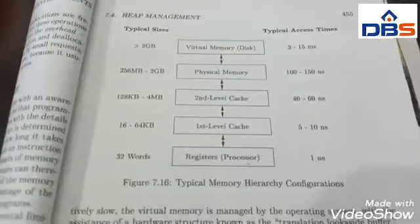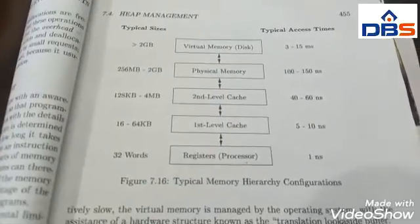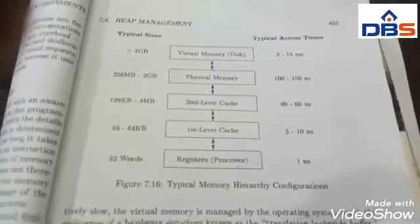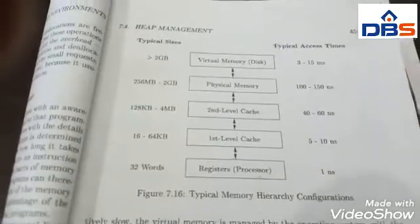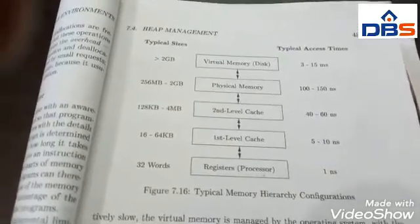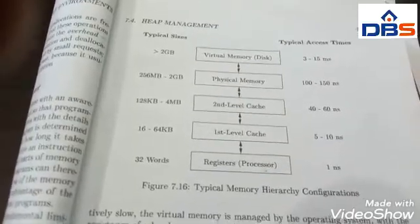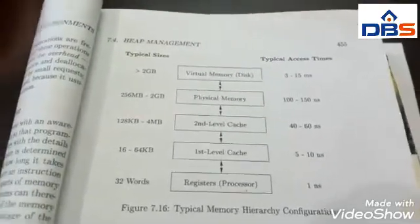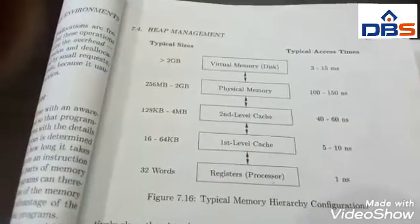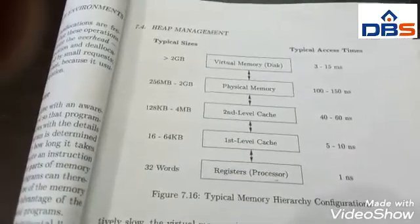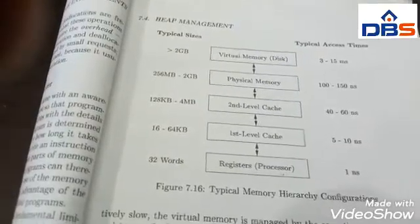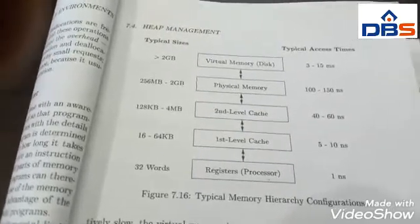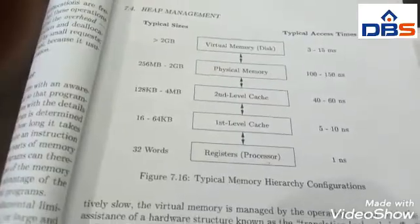A processor has a small number of registers whose contents are under the control of software. It has one or more levels of cache, usually made out of static RAM, that are kilobytes to several megabytes in size. The next level of hierarchy is the physical or main memory, made out of hundreds of megabytes or gigabytes of dynamic RAM. The physical memory is then backed up by virtual memory, which is implemented by gigabytes of disks.